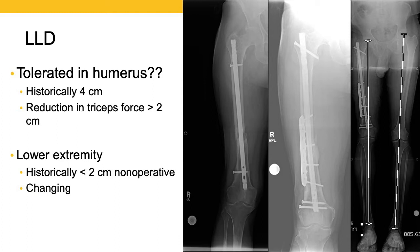However, patients can still be quite functional with that amount. In the lower extremity, we used to think that less than two centimeters of discrepancy would be treated with just expectant management and observation, perhaps a shoe lift, and even really up to five or six centimeters before people wanted to intervene. Although I think those numbers are changing in part because of the technology we're discussing today.